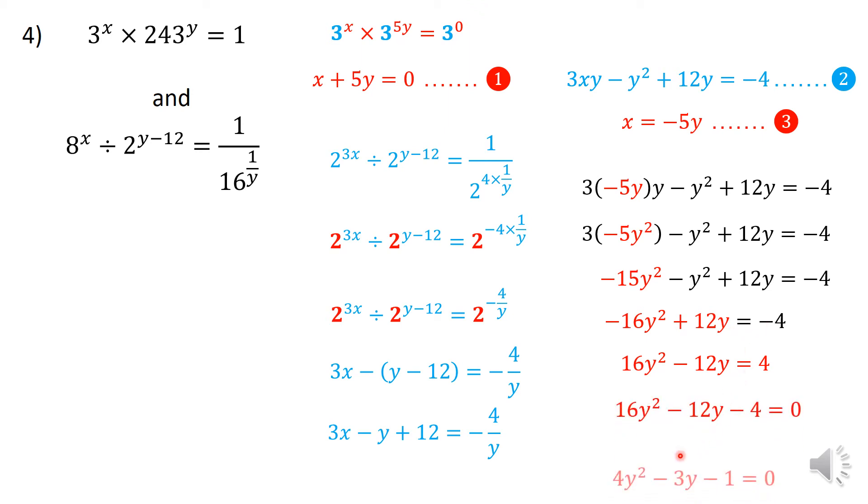So anyway, I can actually simplify this by dividing throughout by 4. Whatever you do, you should arrive at 4y² - 3y - 1 = 0. So this is now a quadratic equation which you should solve, and you can use any method to solve this particular quadratic equation.